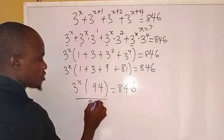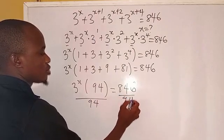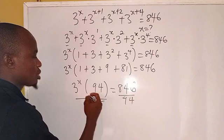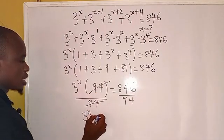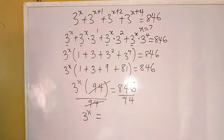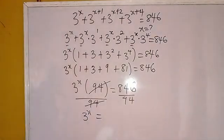So now from there we are going to divide both sides by 94. Dividing both sides by 94, this we cancel, so we're going to have 3 to the power of x equals 9 (846 divided by 94 gives us 9).